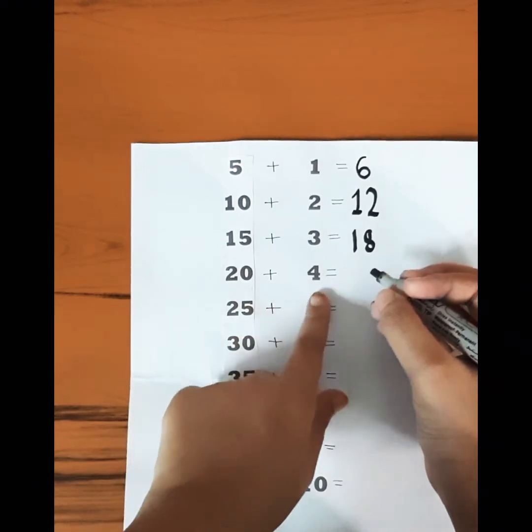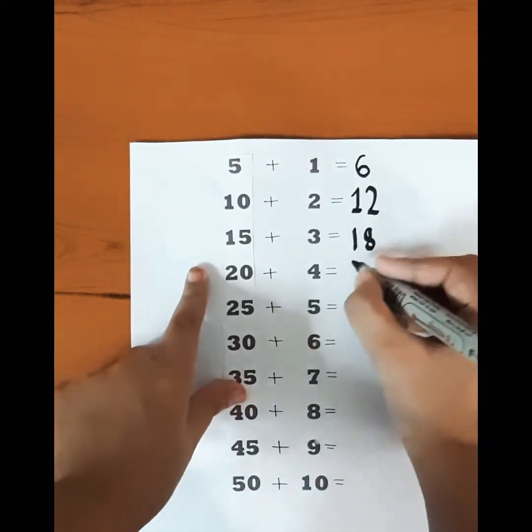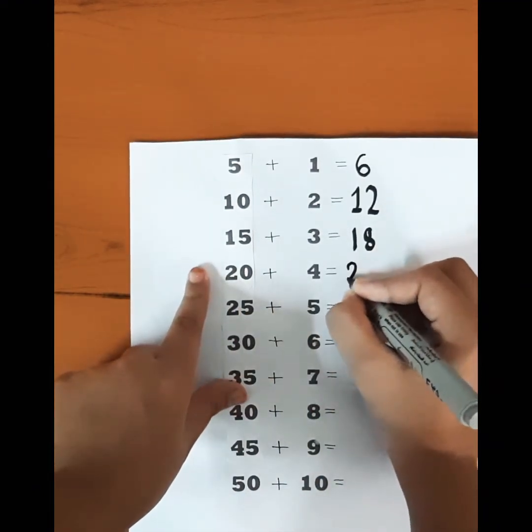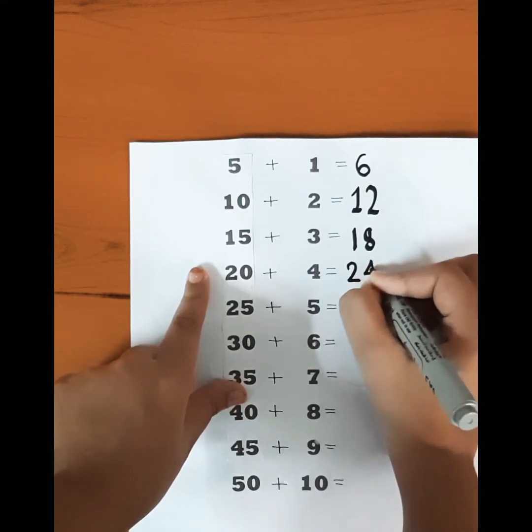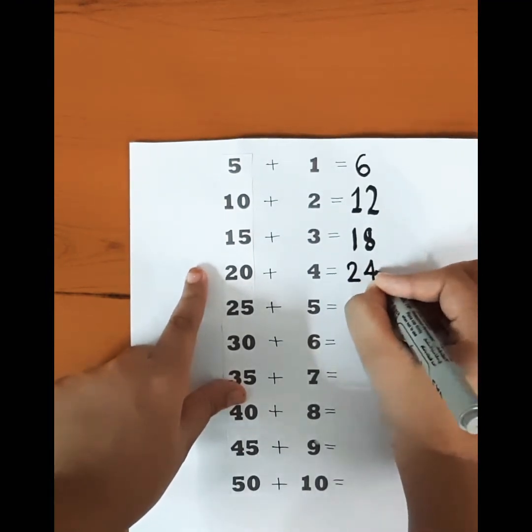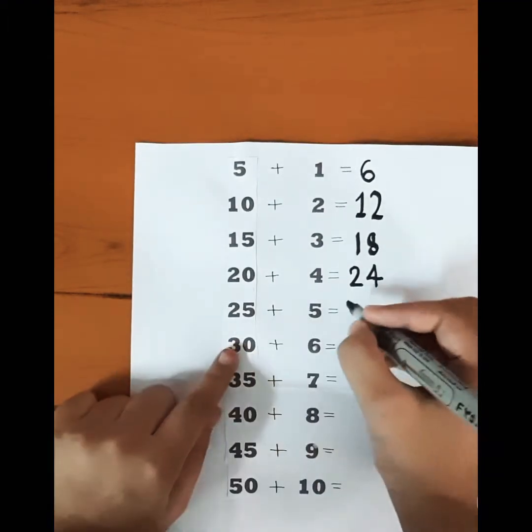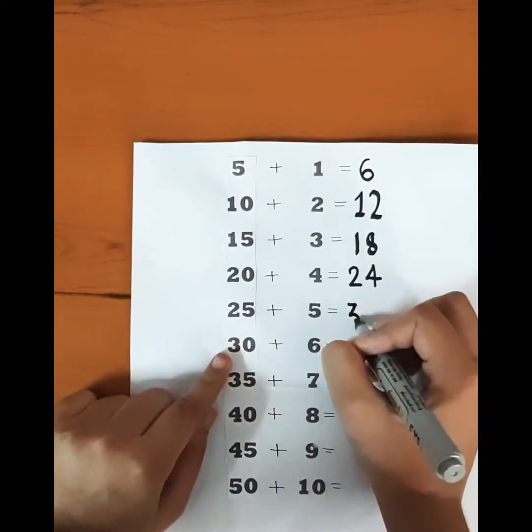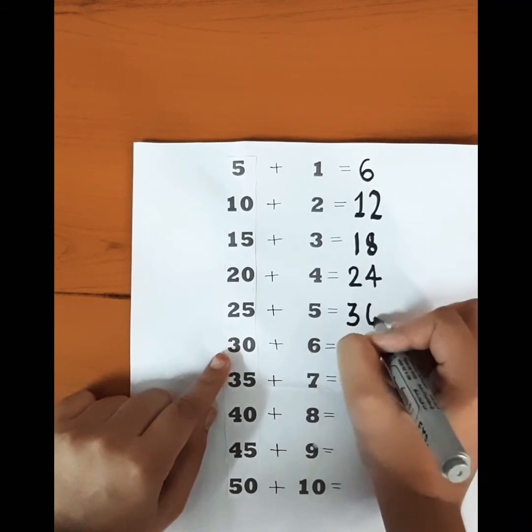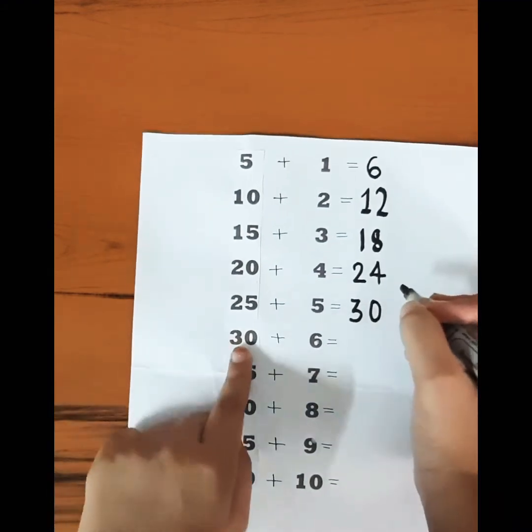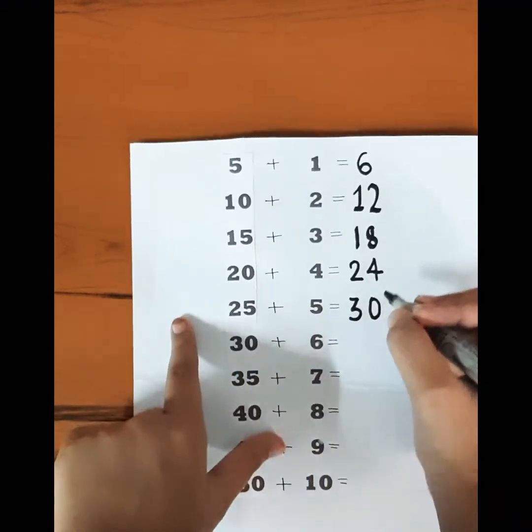...is equal to twenty-four. Twenty-five plus five is equal to thirty. Thirty plus six is equal to thirty-six.